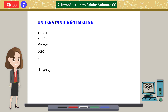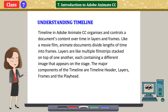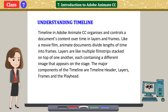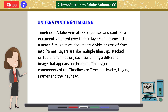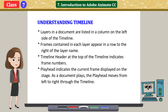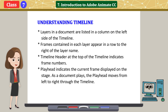Understanding the timeline. The timeline in Adobe Animate CC organizes and controls a document's content over time in layers and frames. Like a movie film, Animate documents divide lengths of time into frames. Layers are like multiple film strips stacked on top of one another, each containing a different image that appears on the stage. The major components of the timeline are: timeline header, layers, frames, and the playhead. Layers in a document are listed in a column on the left side of the timeline. Frames contained in each layer appear in a row to the right of the layer name. The timeline header at the top indicates frame numbers. The playhead indicates the current frame displayed on the stage.